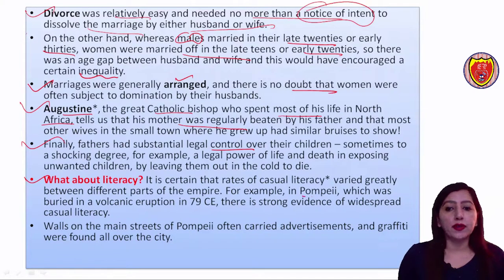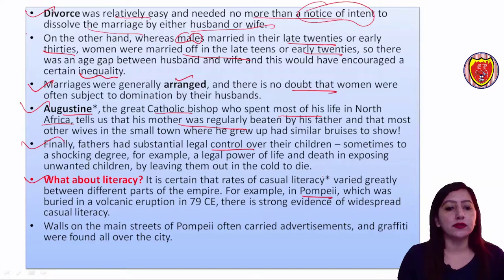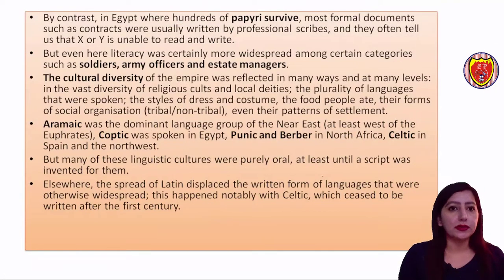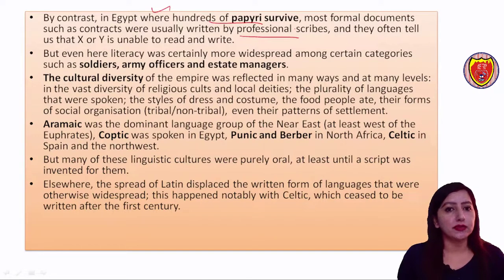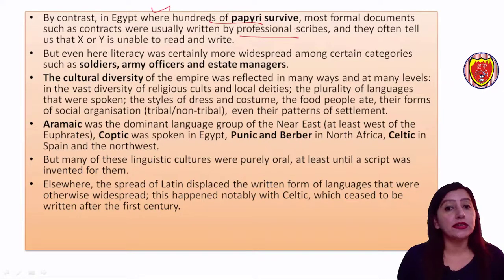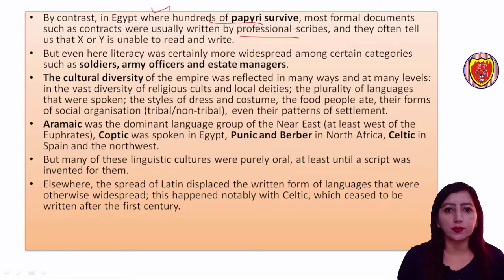For example, in the Pompeii area, which was buried by a volcano eruption in 79 CE, there was casual literacy visible in advertisements and graffiti on the walls of streets. By contrast, in Egypt, papyrus was the writing material used for formal documents and contracts, and professional scribes wrote on this material. Some people could read and write, while others could not. Literacy was certainly more widespread among certain categories such as soldiers, army officers, and estate managers.